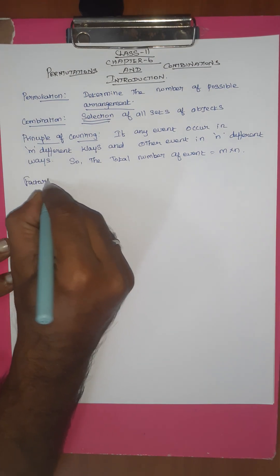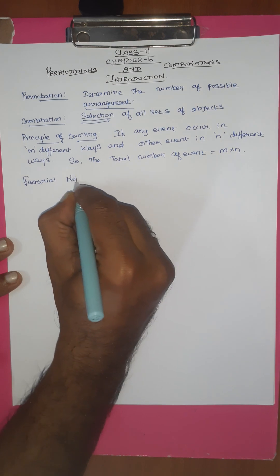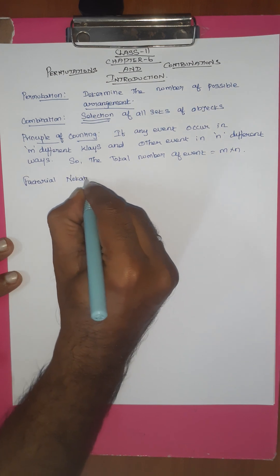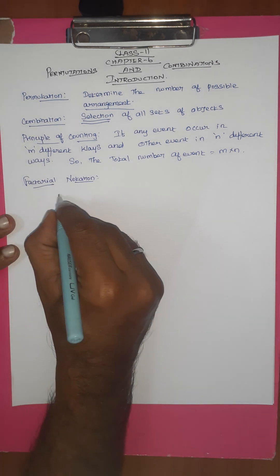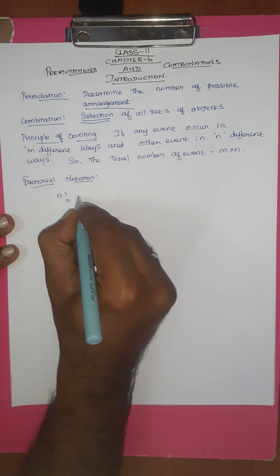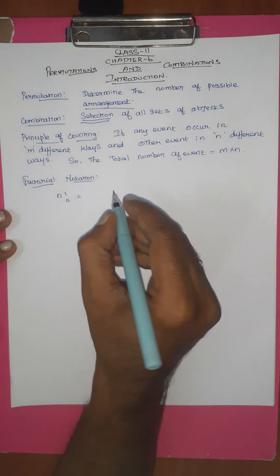Next: factorial notation. So n factorial — n factorial is defined step by step.